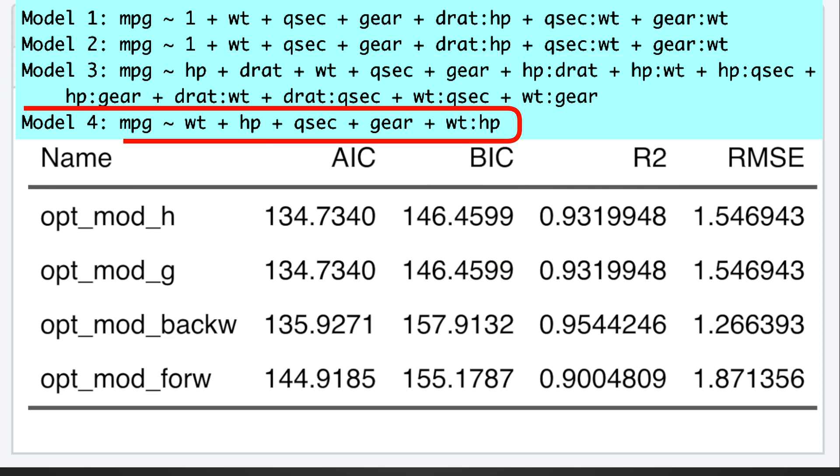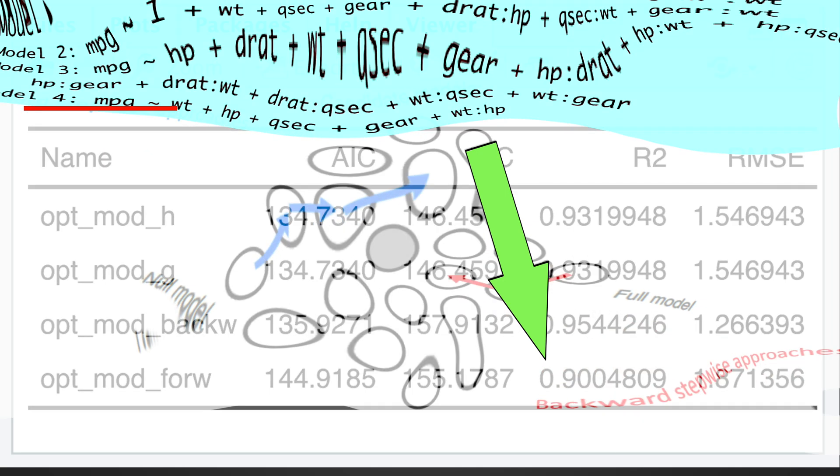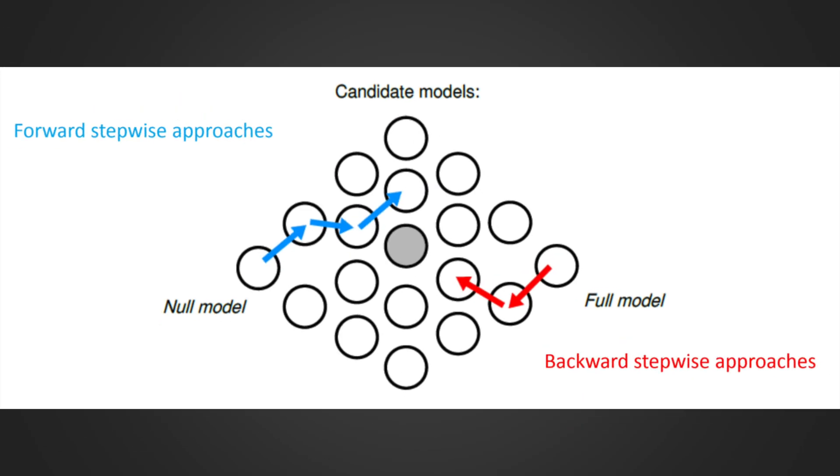And forward selection found only one interaction, which looks like underfitting, which is in line with its lowest R-squared. So I hope I could convince you that glmulti approach is superior to the stepwise selection approach and produces a truly best model.